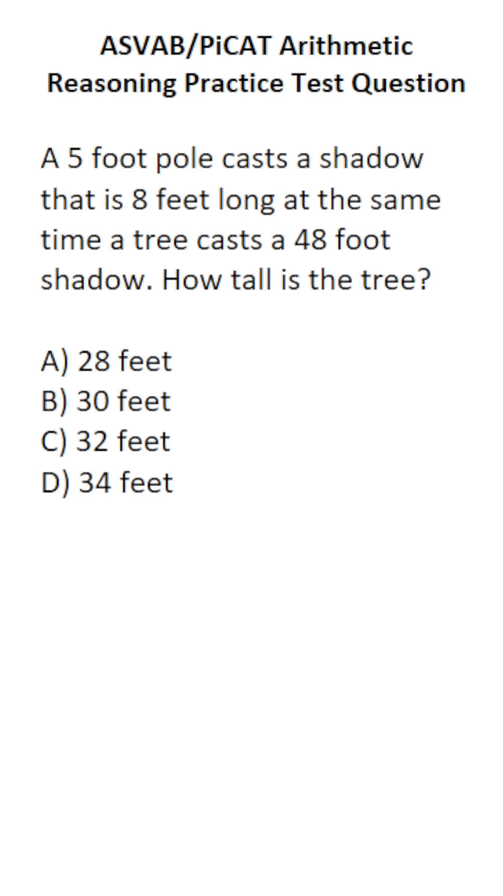This arithmetic reasoning practice test question for the ASVAB and PiCAT says a 5-foot pole casts a shadow that is 8 feet long. At the same time, a tree casts a 48-foot shadow. How tall is the tree?